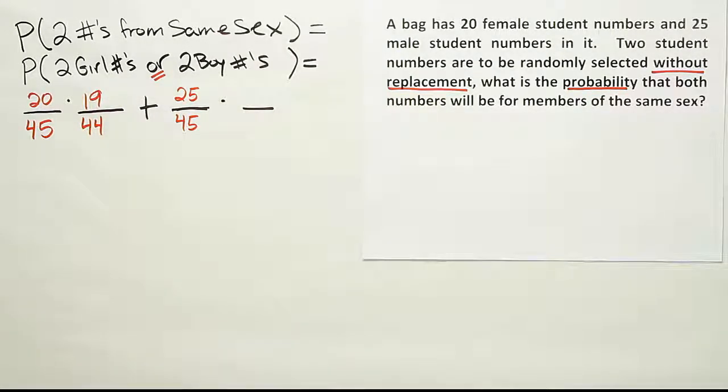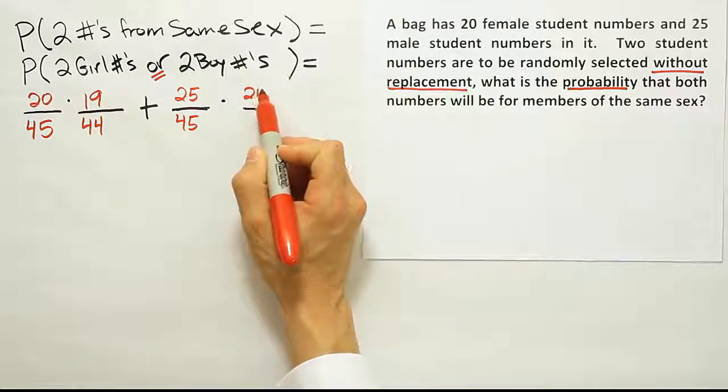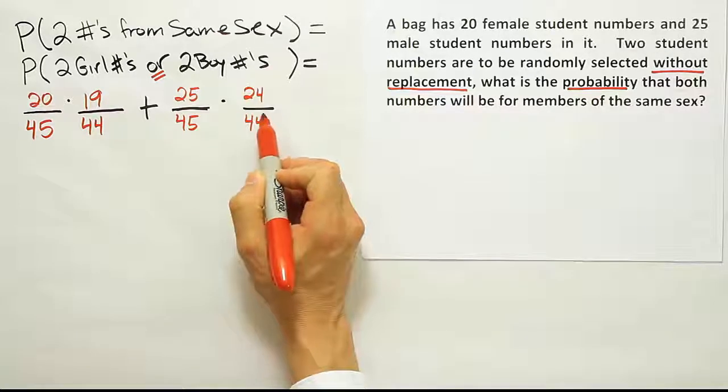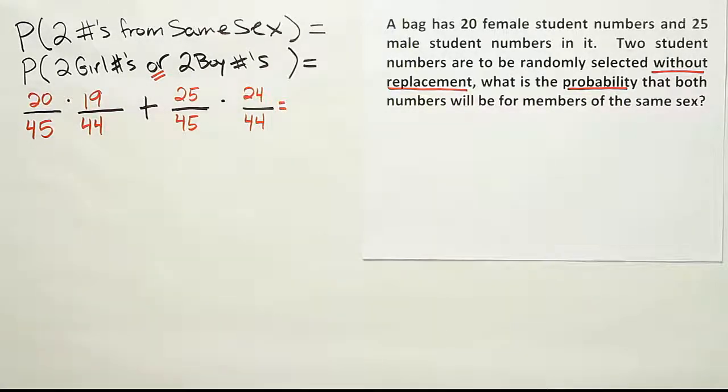And then I take that number, I put it aside. I assume that I got a boy's number. When I go back in, how many boy numbers will be left? Only 24 out of a total of 44. And this will be the final solution after I work this problem out with my calculator.